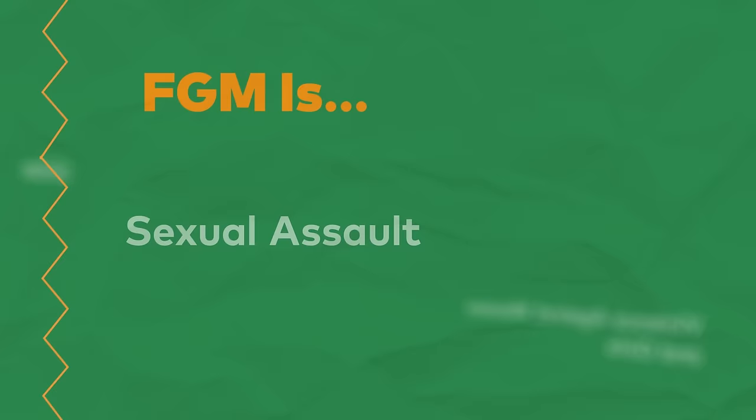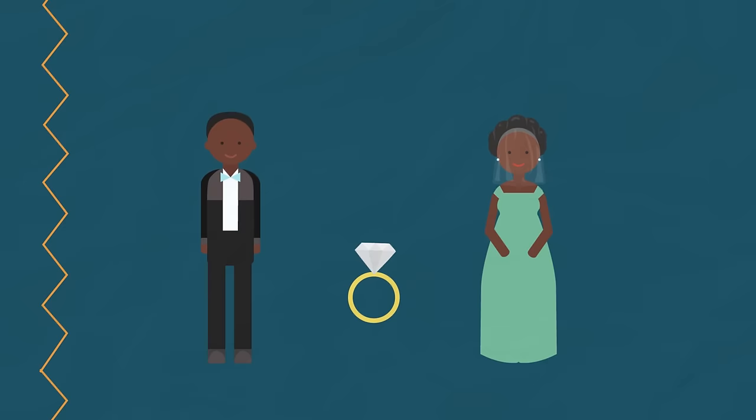FGM is violence against women and girls, child abuse, sexual assault. Often it's about controlling female sexuality, a tradition to prepare a woman for marriage, allegedly to purify them for their husbands.